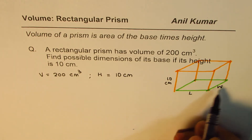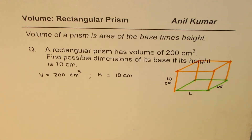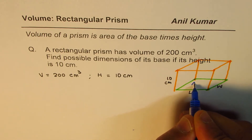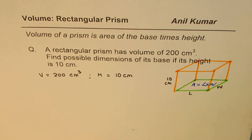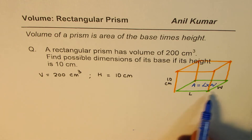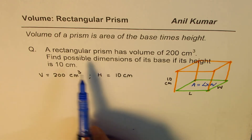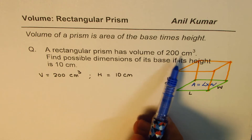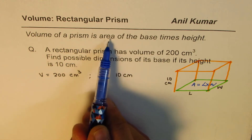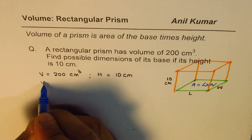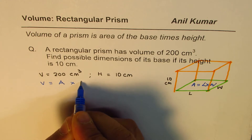We need to find length and width of the base. Now for a rectangle, what is the area of the base? The area of the base will be equals to length times width. So that is how length and width are related with area. Now let's look into this question once again — it says a rectangular prism has volume of 200 cm³. Volume of a rectangular prism is area of base times height. So we can say that the volume is area of base, that is A, times height.